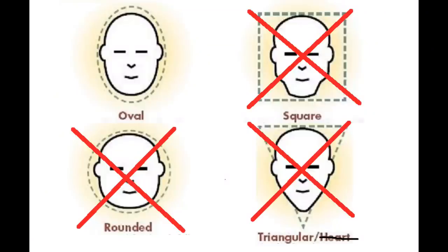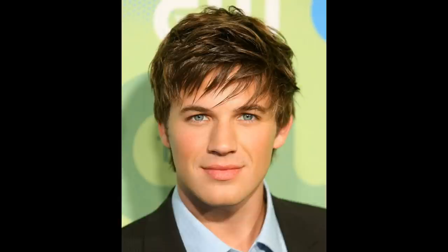If you have an oval face shape then you're pretty lucky because most hairstyles actually complement it. There is an exception however — I would probably avoid heavy bangs if you have an oval shaped face. This gentleman has an oval shaped face but it actually looks heavier and rounder because of the heavy bangs covering half of his forehead.